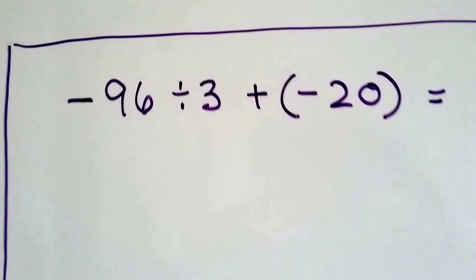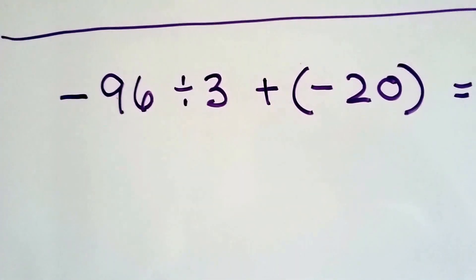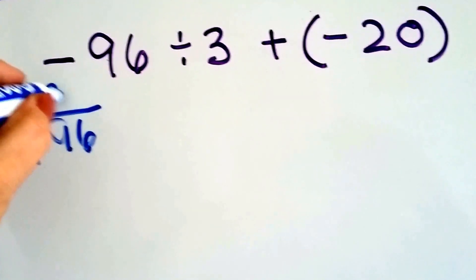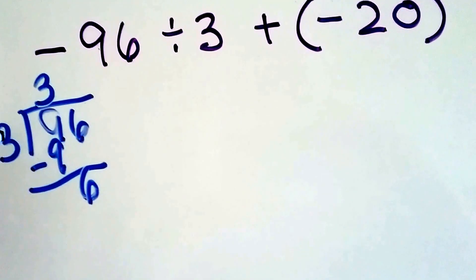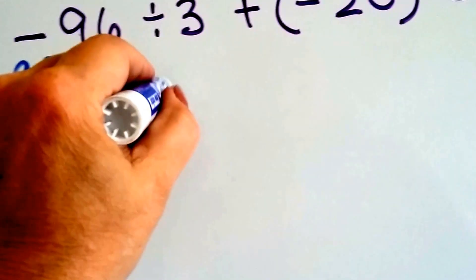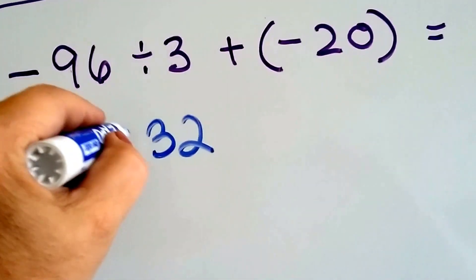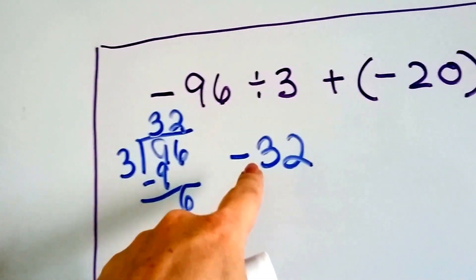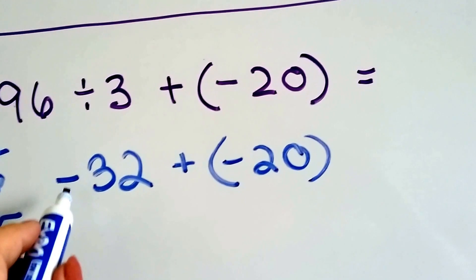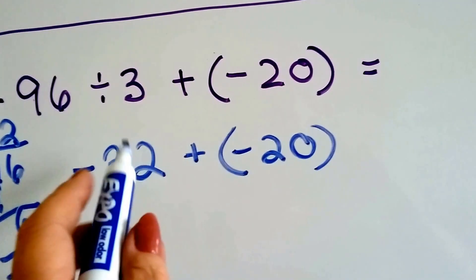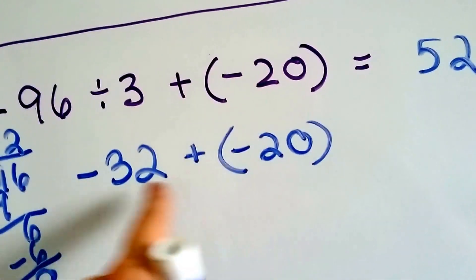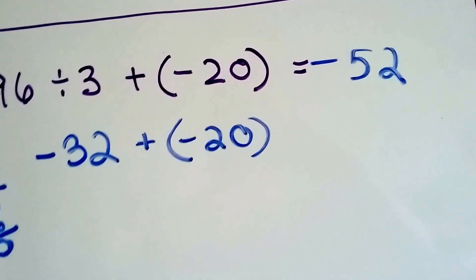Now let's look at this one: negative 96 divided by 3 plus negative 20. We do the division first. 96 divided by 3 — 3 goes into 9 three times, bring down the 6, it goes in 2 times — so we get 32. Because this is a negative and that's a positive, unlike signs, it's negative. So we have negative 32. Now we add negative 20. We're adding a negative and a negative, so we just add them: 32 and 20 more is 52. We take the sign of the addends — both negative — so it's negative 52.